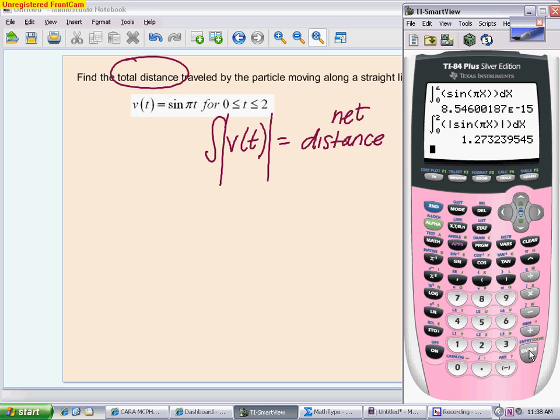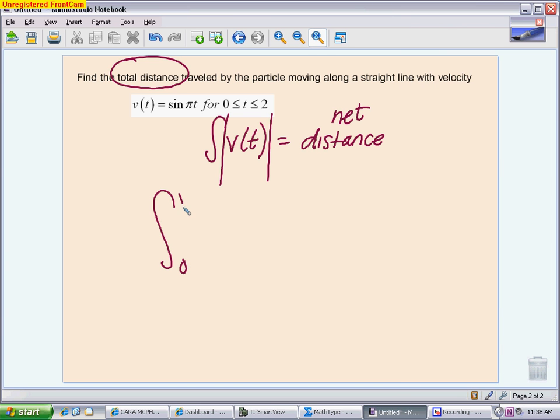Now, let's say you weren't allowed to use a calculator or you just were supposed to set this up to kind of show that change in direction. Another option is for you to say, you know, I'm going to go from 0 to 1 of the sine of pi x. But then I'm going to add the absolute value of whatever I get from 1 to 2 of sine of pi x. Because I know that this is going to end up being a negative area, but it's still a distance that was traveled. So that is one option.